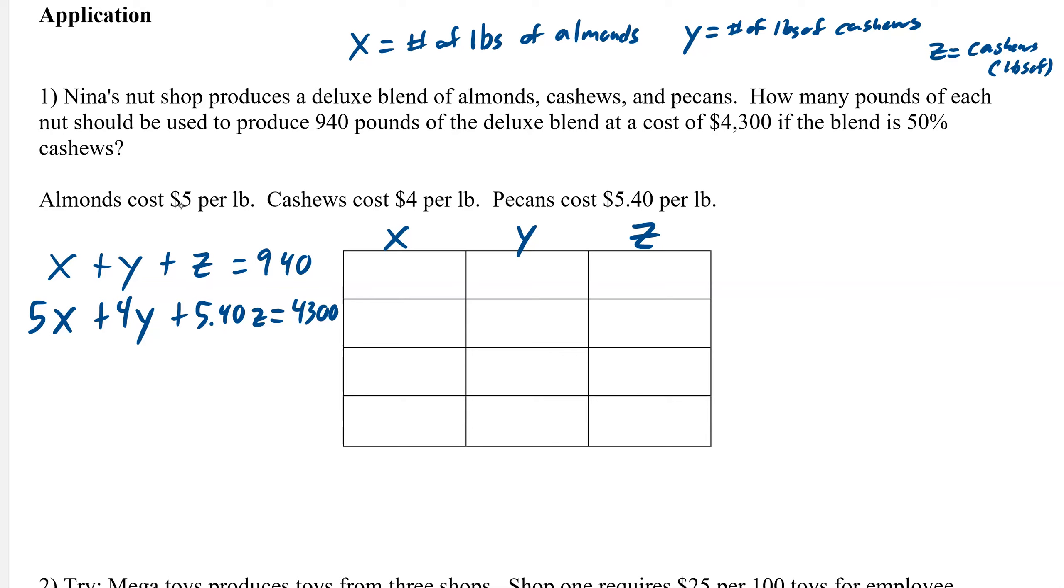We need one more equation. It says the blend is 50% cashews. So that means our cashews are 50% of the entire blend, which is 940 pounds total. If 940 pounds total is being split among the three, half of it is cashews. So that would make this 470.